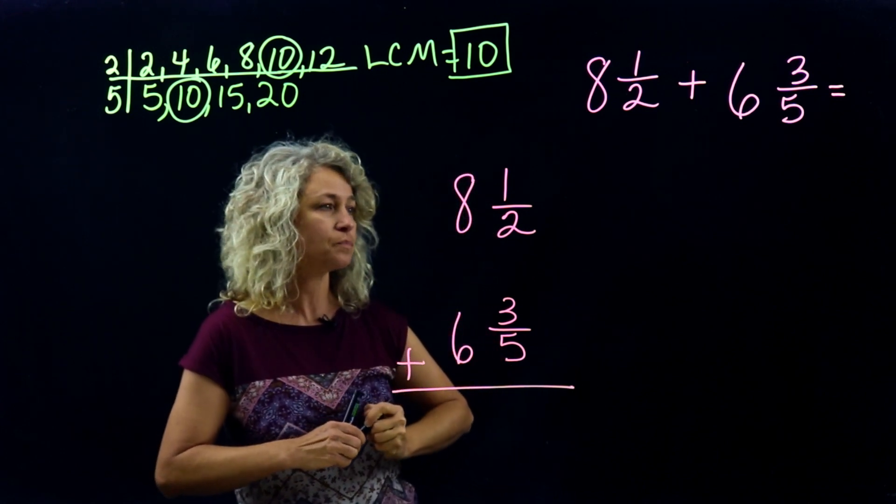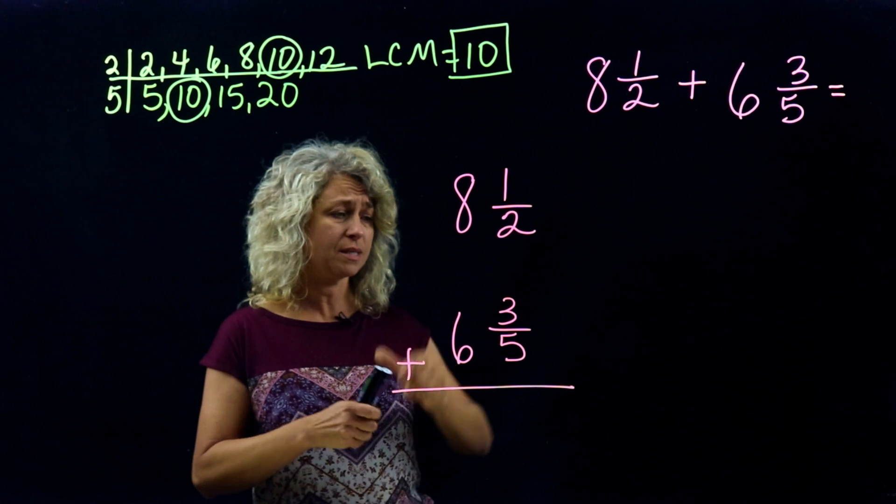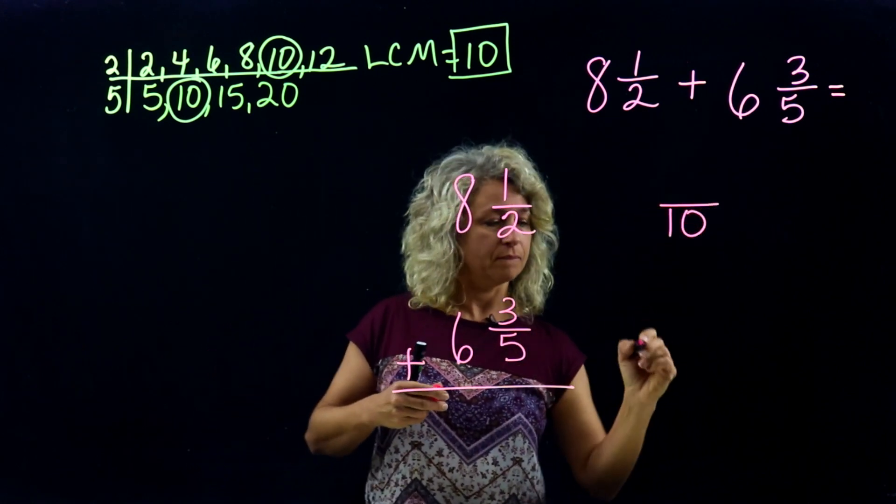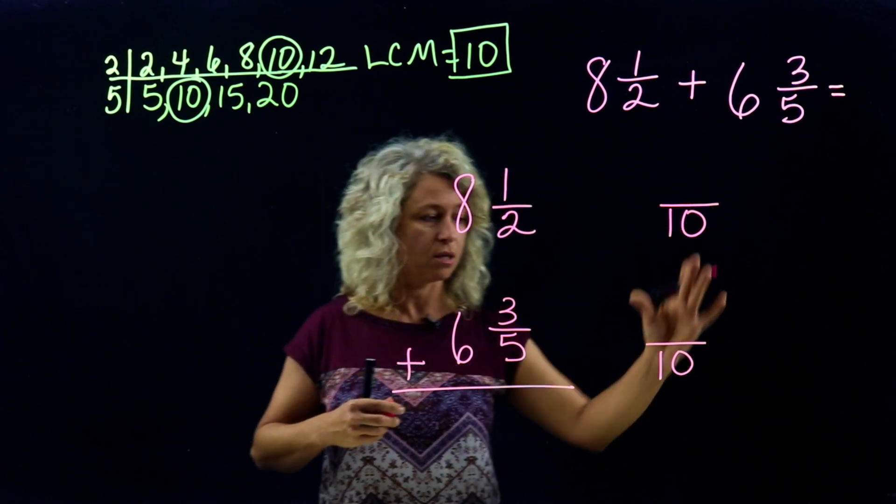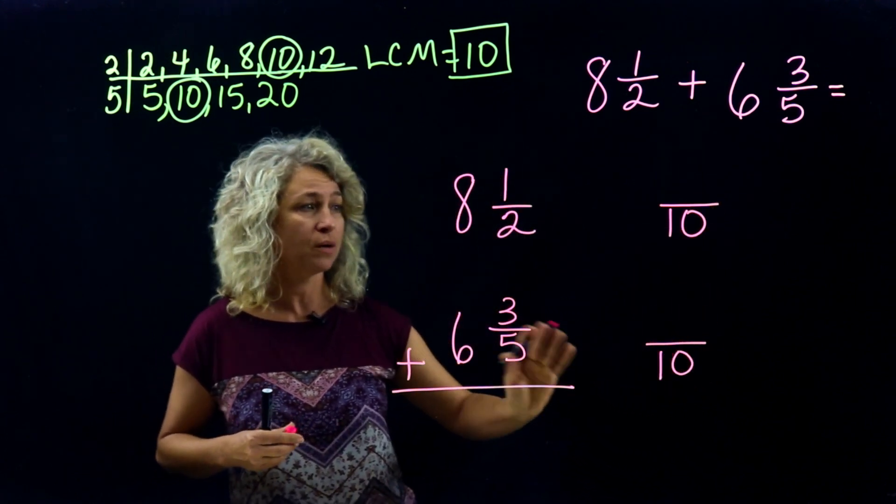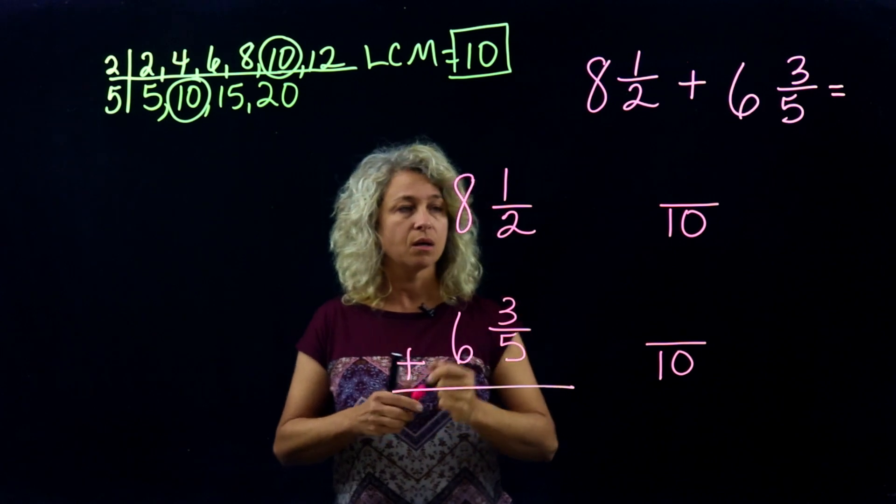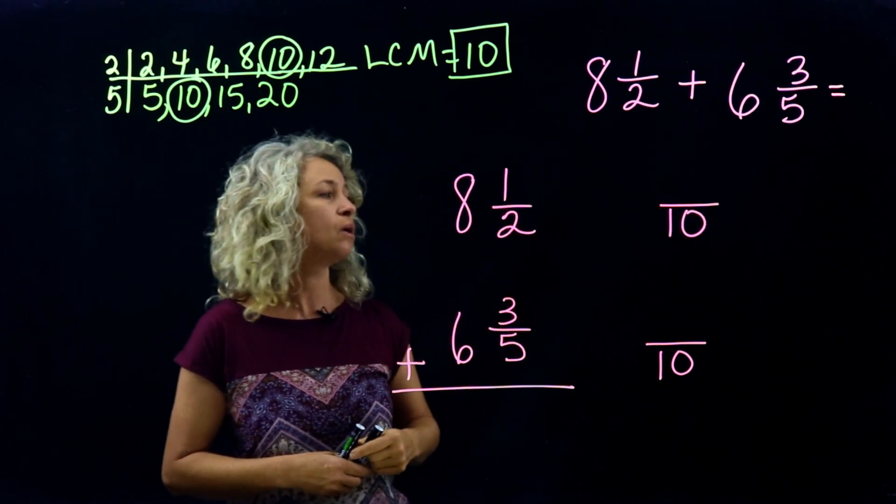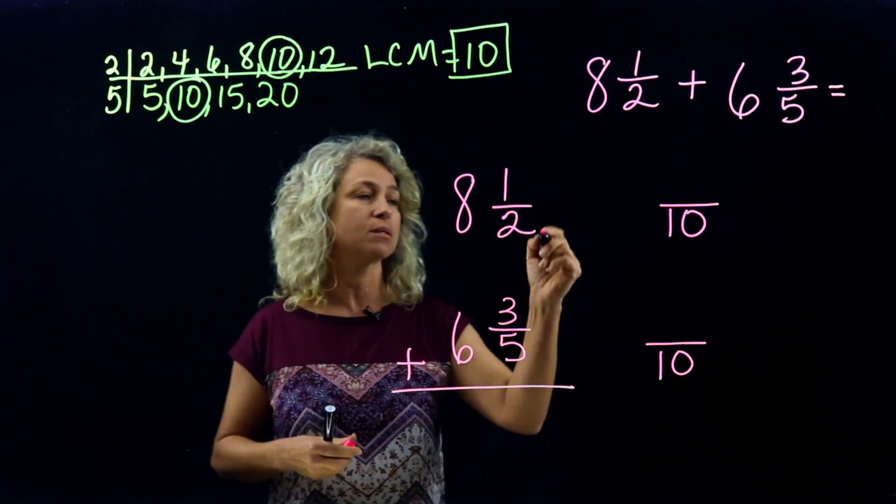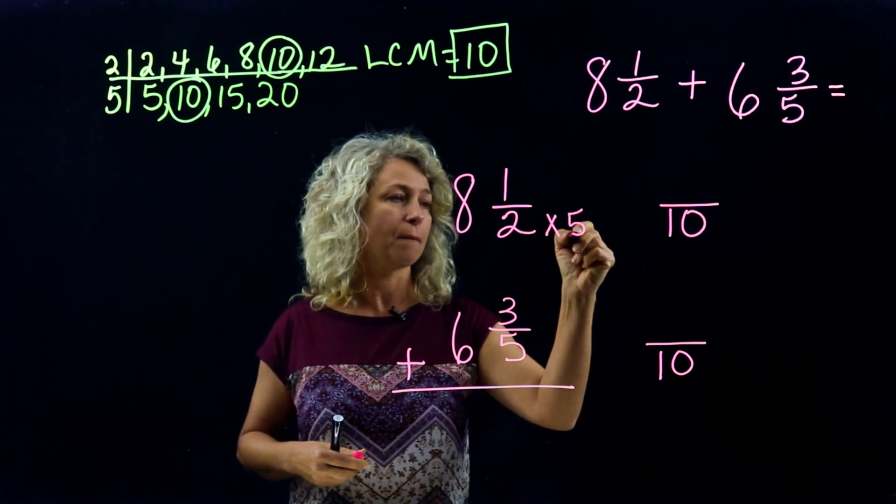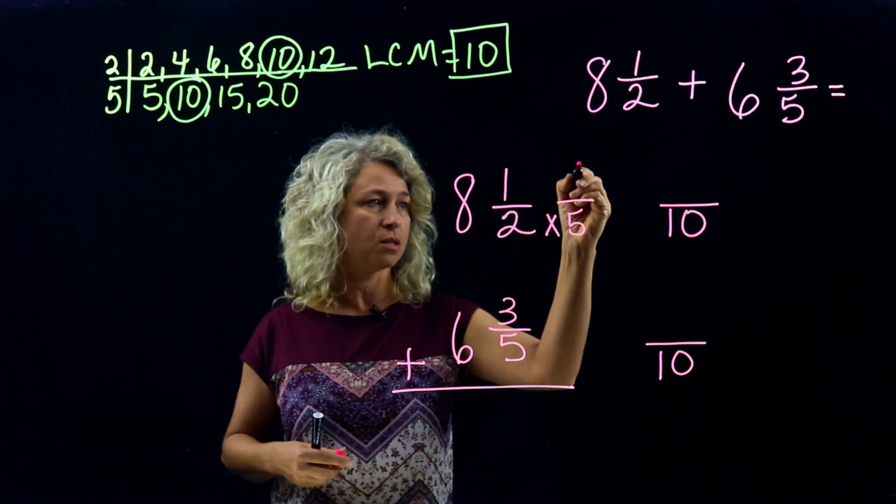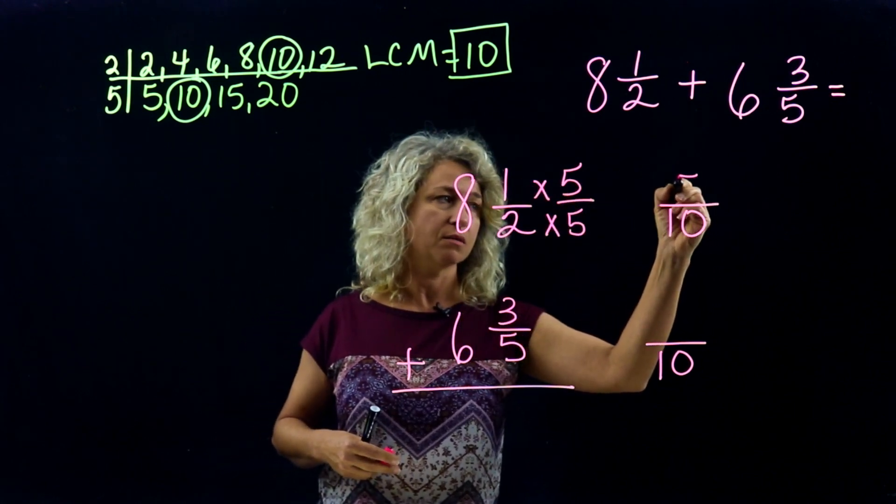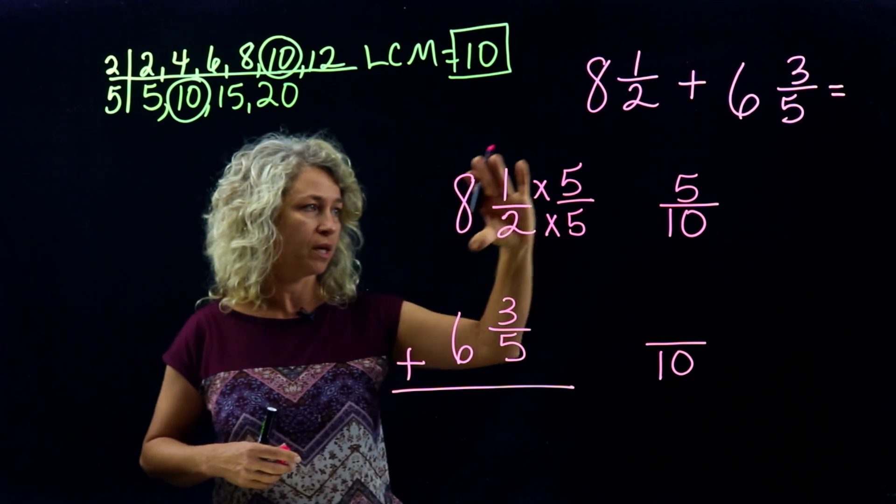Alright, we know the denominator is 10 and we'll just go ahead and put our tens over to the side. Now in this case, we will see how you get from a 2 to a 10. You're going to multiply times 5 and do the same to the top. And 1 times 5 is 5. Don't forget, bring over the 8. So 1 and a half is equivalent to 8 and 5/10.